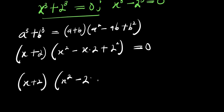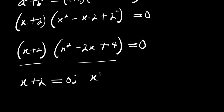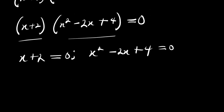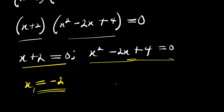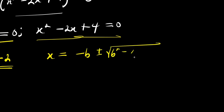So we have x plus 2 times x squared minus 2x plus 4 equals 0. We equate each factor to zero: x plus 2 equals 0, and x squared minus 2x plus 4 equals 0. From the first factor, x equals negative 2. This is x1. We have a quadratic equation here which we can solve using the quadratic formula.